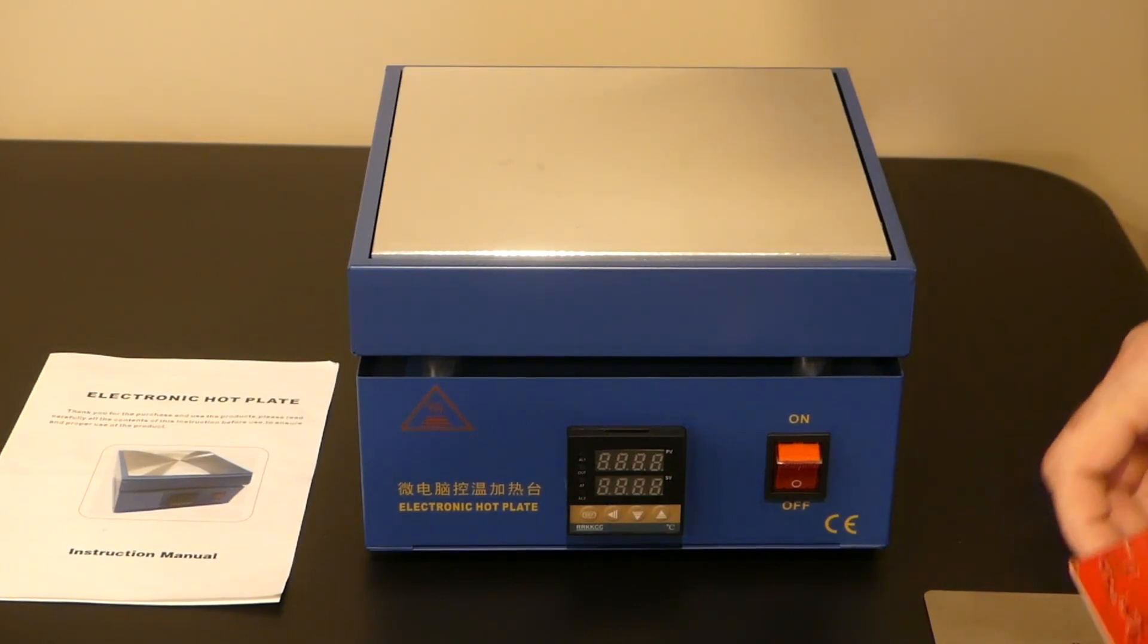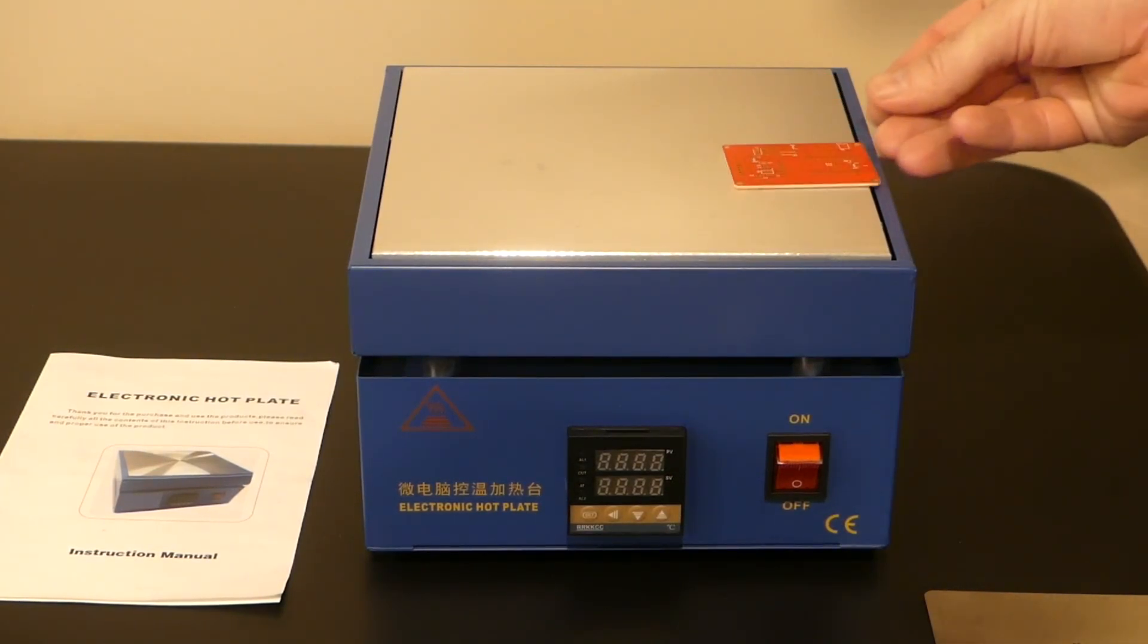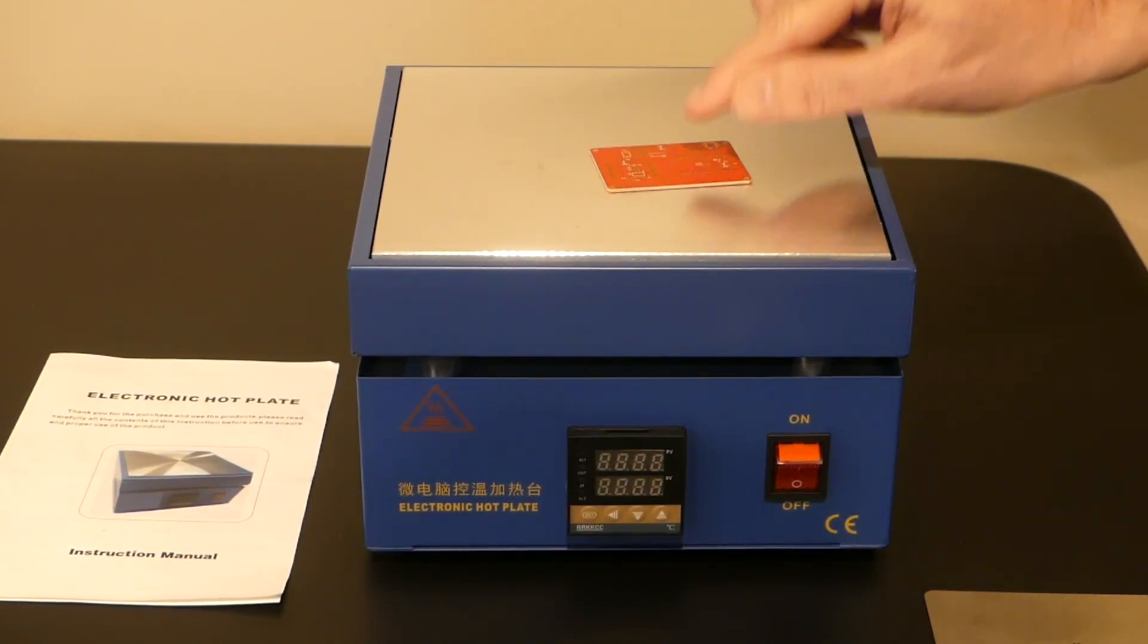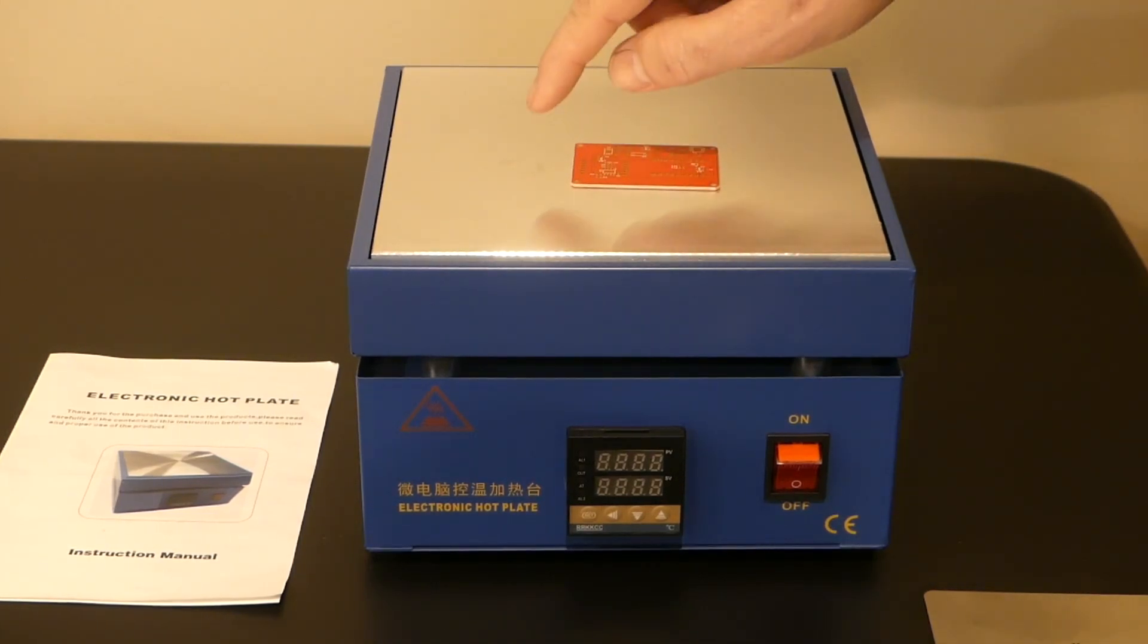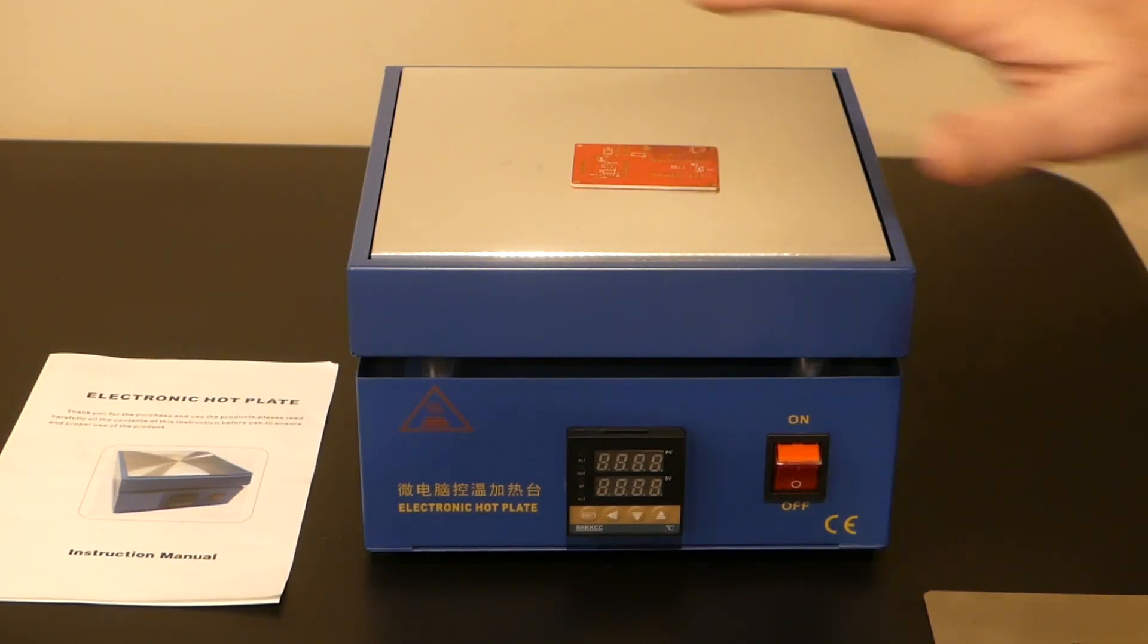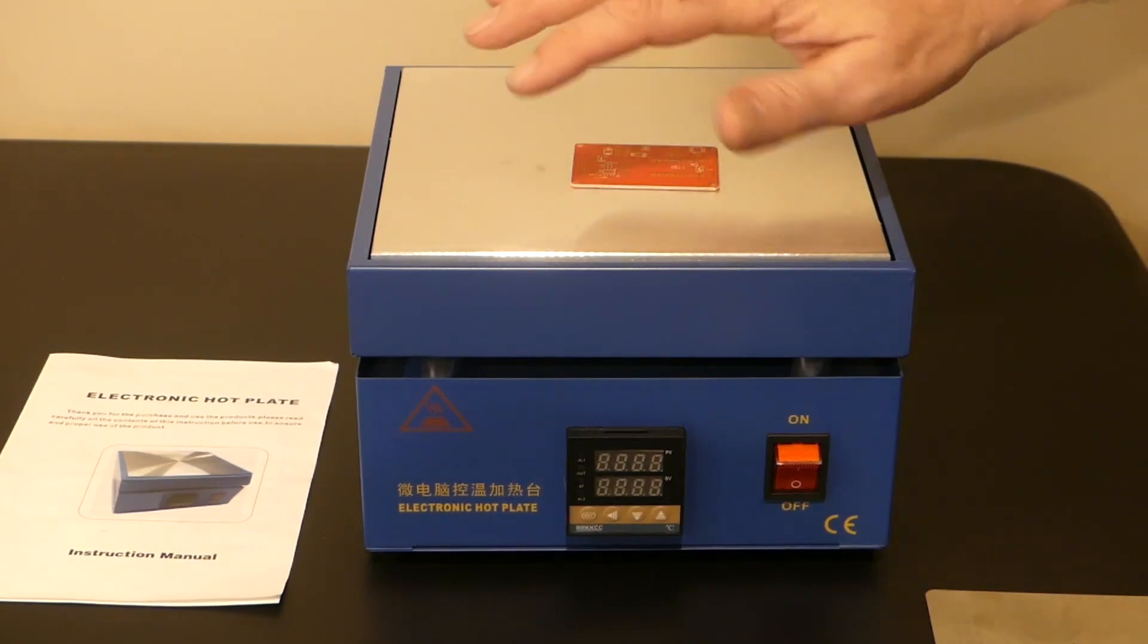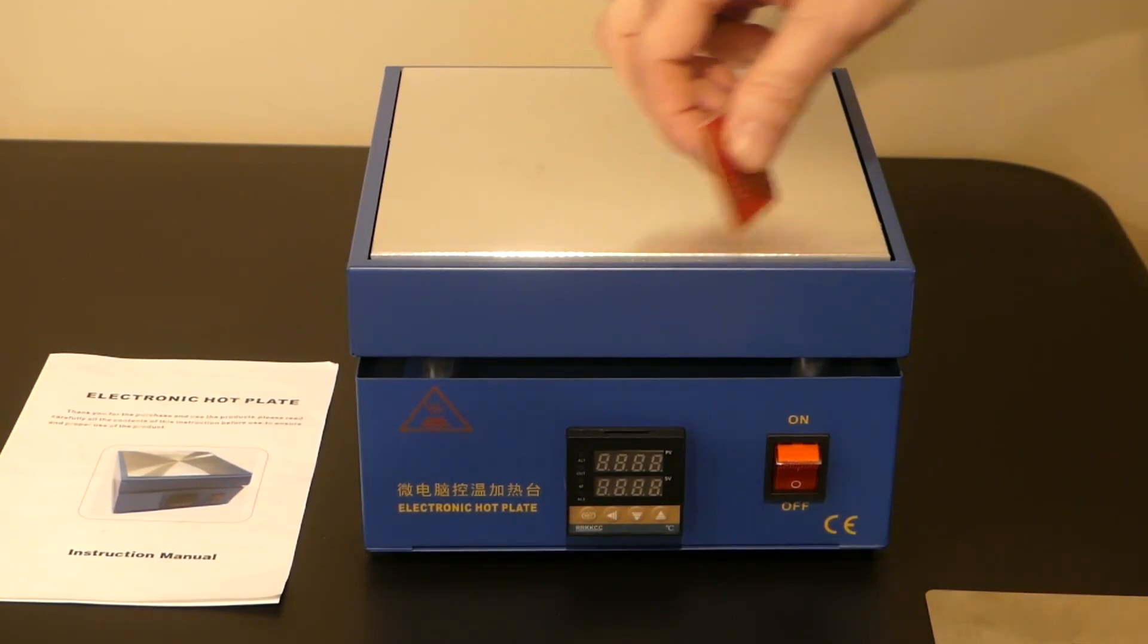So once it hits your set point value, you want to use tweezers to put the board down and slide it in place very carefully and just keep an eye out and watch for the components to all melt and go into place where you want them. And when they get there, turn the power off and carefully remove the board and set it down on something else to cool. You don't want it to cool on the plate because the plate will take too long to cool and probably melt any parts that have plastic on them.